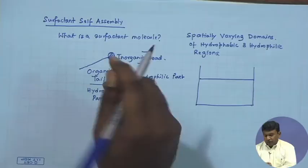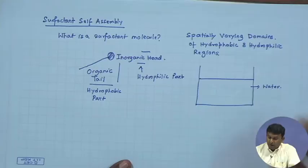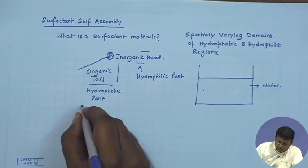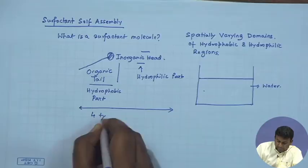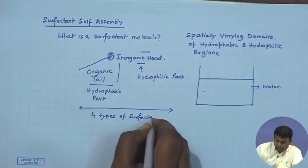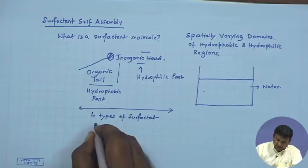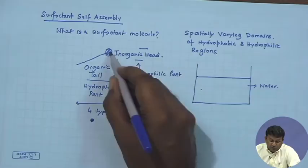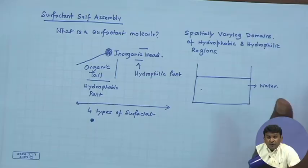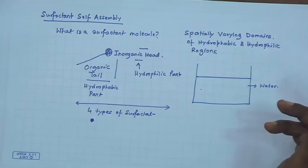The hydrophilic part will like water and the hydrophobic part will not. There are four types of surfactants classified by the nature of the head group: cationic surfactant if the head group contains a positive charge, anionic surfactant if it contains an anionic group, non-ionic surfactant if the head group contains no charge, or zwitterionic surfactant if the head group contains both charges.